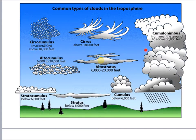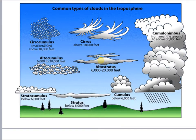Cumulonimbus shows large vertical development from the updrafts of the unstable atmosphere. Remember we have nimbus because there's rain here. A little higher up we have altostratus — very similar to stratus clouds only higher. Then altocumulus, your little white puffy cotton-ball clouds. And higher yet, cirrocumulus and cirrus clouds.